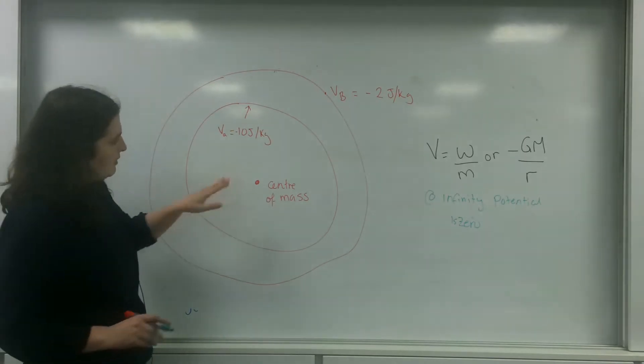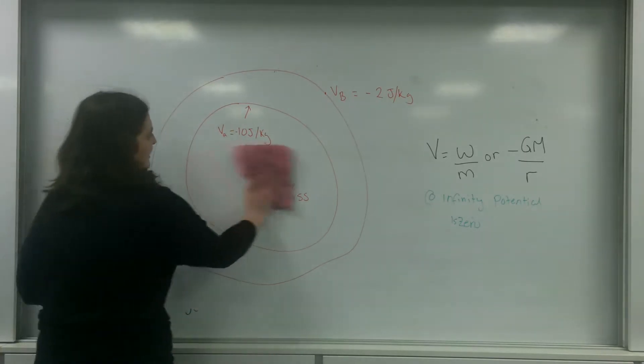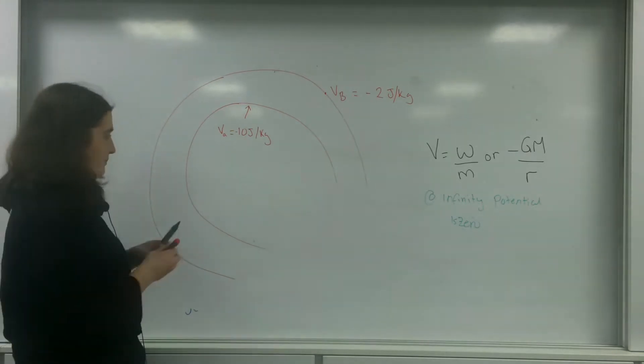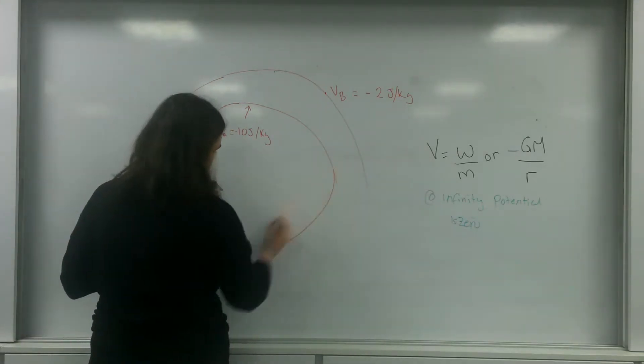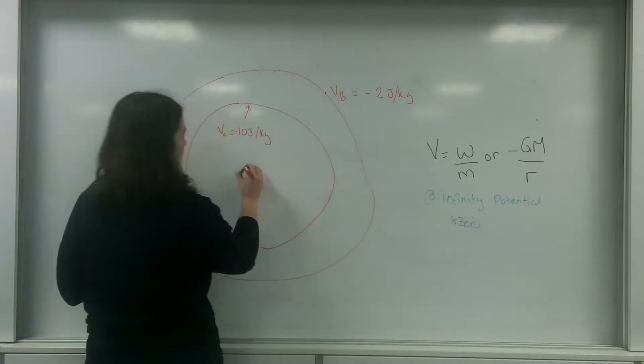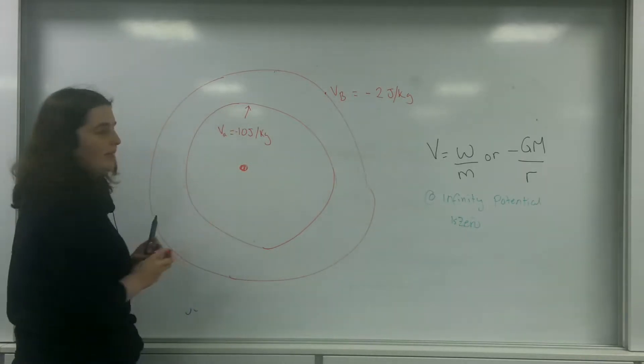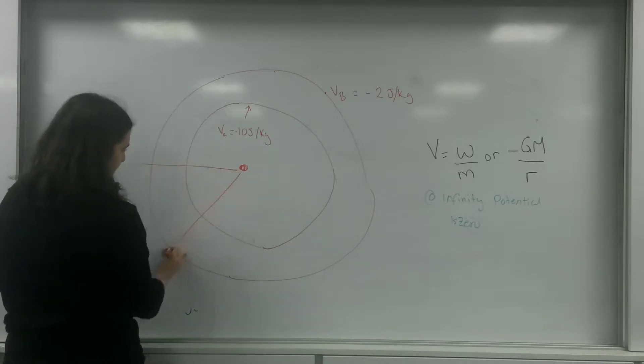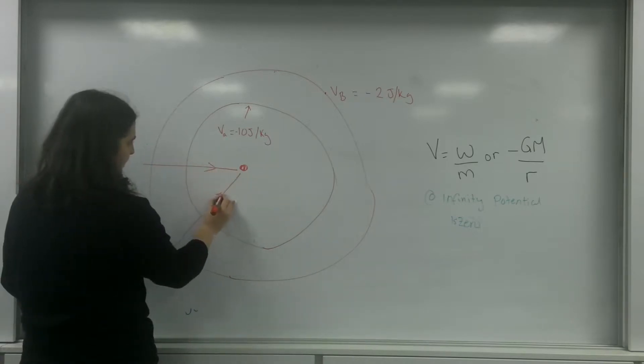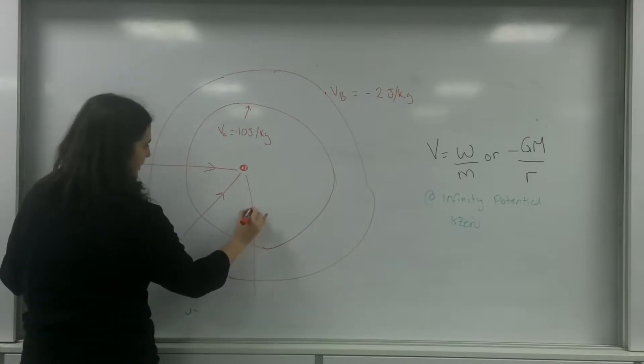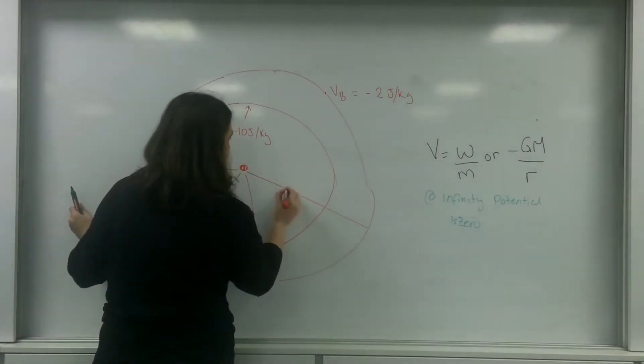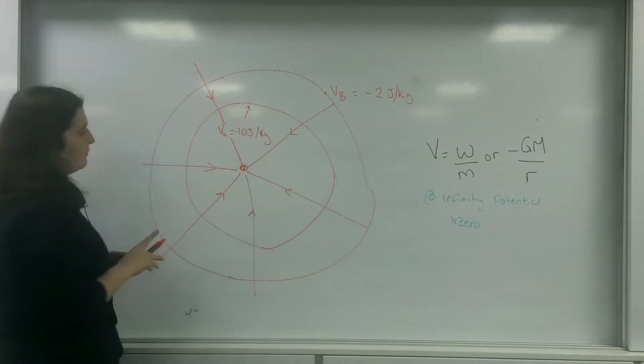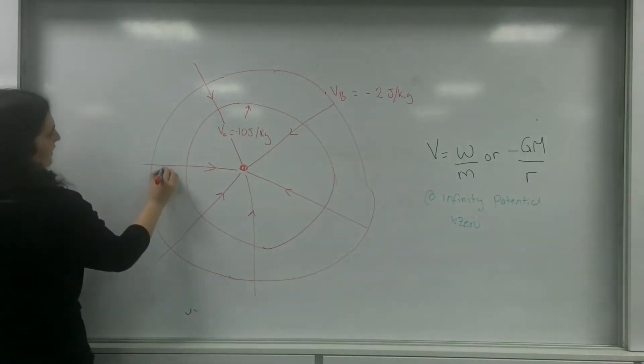So this here, my center of mass is a little bit off, as is my diagram, so I'm just going to clean this up a little bit. My object is in the center here, and it has field lines that look like this. So these are the field lines.